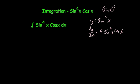So if you were to differentiate sine to the power of 5x, you get 5 sine to the power of 4x cos x. Now notice how similar that is to what we're actually integrating.